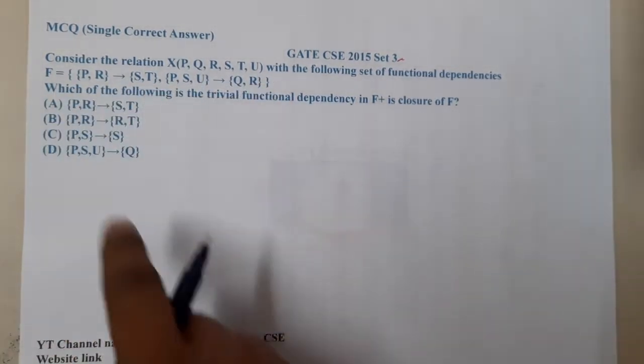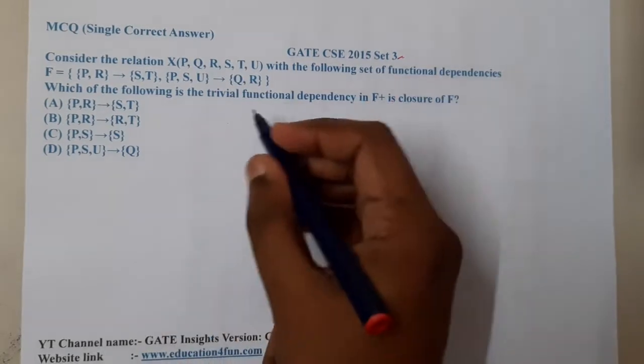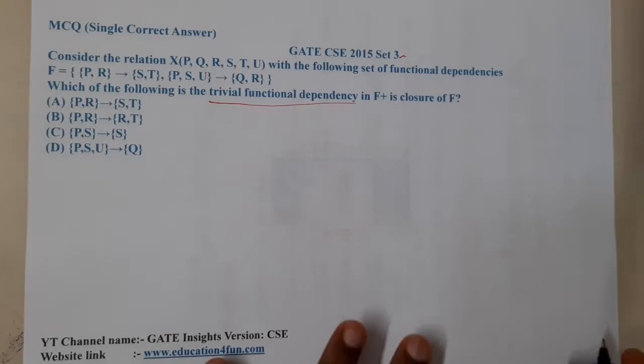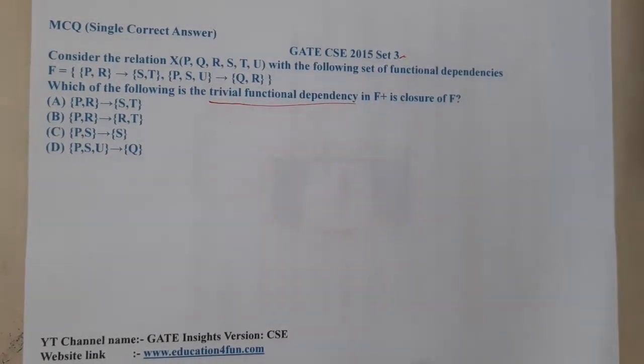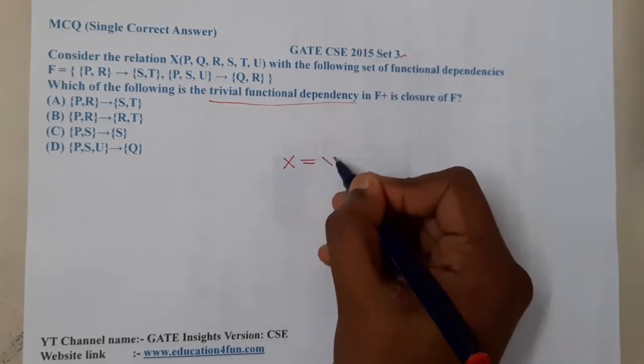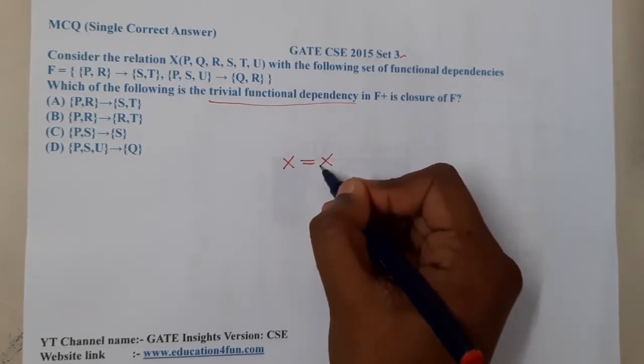They give some functional dependencies and are asking which of the following is a trivial functional dependency. So let us recall what is a trivial functional dependency. Assume that I told you that if you give me values of X and I will say values of X.